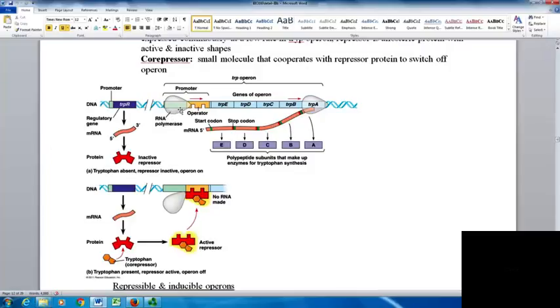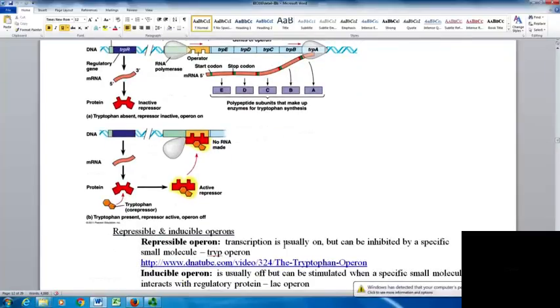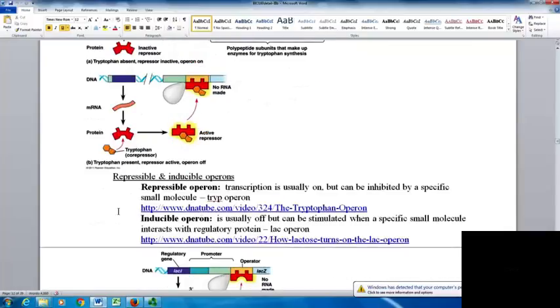The repressible operon has transcription usually on but can be inhibited by a specific small molecule. In the case of the tryptophan operon, tryptophan acts as that molecule. There's a link to a video on DNA tube that I strongly recommend you watch.